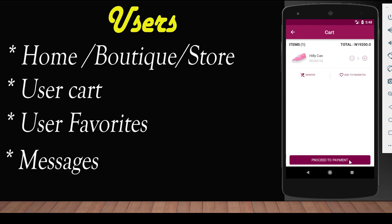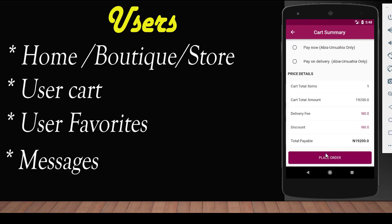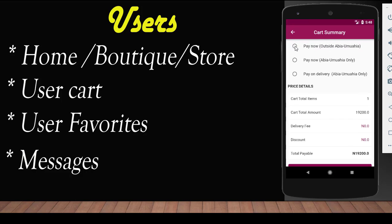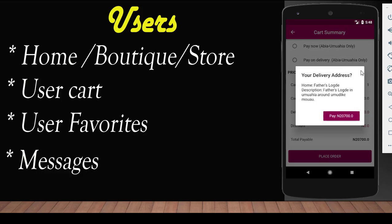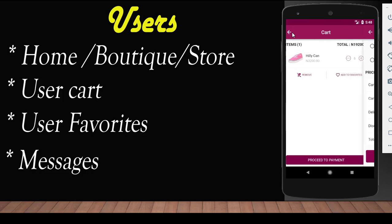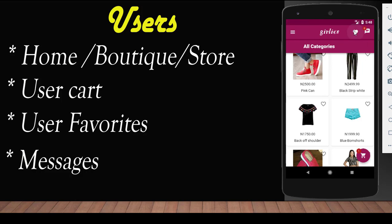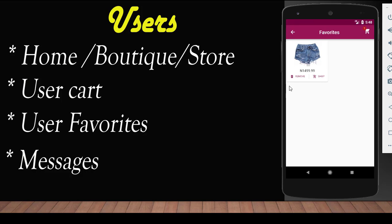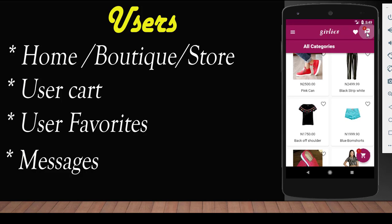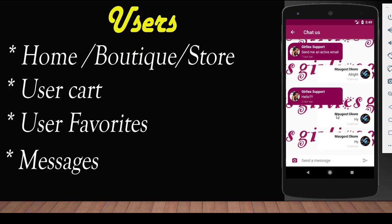From the cart, the user could also proceed to make payment, select a payment mode, place an order, and see the delivery location. Then we also have the user favorites — this is where the user likes an item and it goes to favorites to stay. The user could come to favorites and shop from there, or remove the item. Then we have messages — this is in-app messaging to communicate with the support administrator, lay complaints, chat with the administrator, make an order, cancel an order, or check the order status.